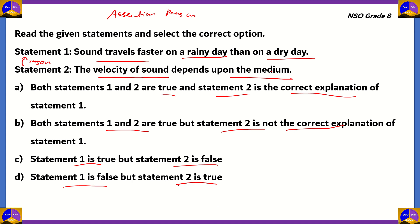Let's look at statement two: the velocity of sound depends upon the medium. Sound waves require a medium to travel, which means the speed of sound also depends on the medium. Experimental data shows that sound travels fastest in solids and slowest in gases, and does not travel at all in vacuum. Therefore, statement two turns out to be true, which means option C — which claims statement two is false — is incorrect.